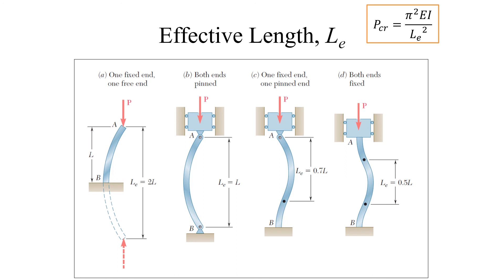The critical load depends on the effective length, which in turn depends on the end connections. For one fixed end and one free end, the effective length equals 2L. For both ends pinned, the effective length equals L. For one fixed end and one pin end, the effective length equals 0.7L. For both ends fixed, the effective length equals 0.5L.